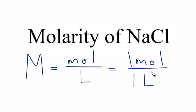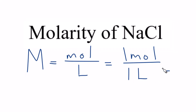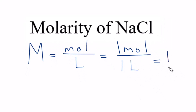What we'll do is fill a volumetric flask with some water, add our one mole of NaCl, and then bring the water up to the mark — the one liter mark. This gives us a one molar solution of NaCl.